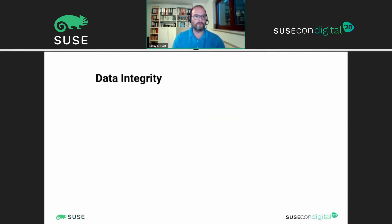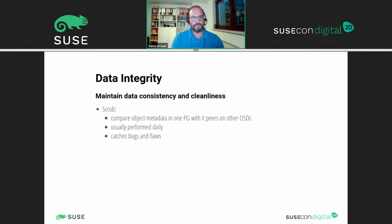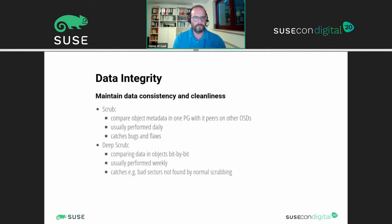If you speak about security, data integrity is also important for consistency and cleanliness in your data. There are some processes in Ceph to handle that. One is scrubbing, which compares the metadata on a placement group with the peers of the other OSDs — done on a daily basis by default. It catches bugs and flaws you potentially have. On the other hand, deep scrub does a bit-by-bit comparison between placement groups, done less often — weekly by default. You can also catch bad sectors or bit flips with that.